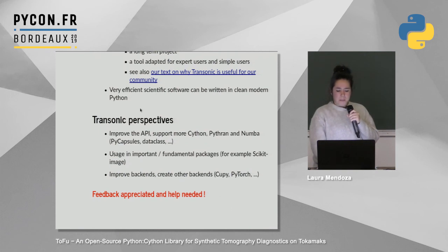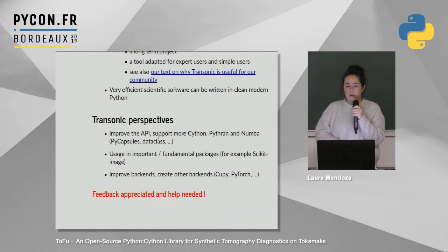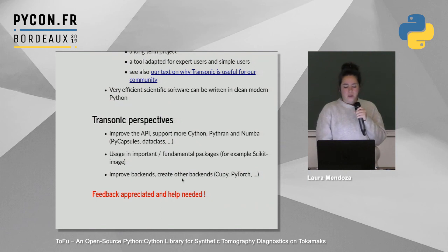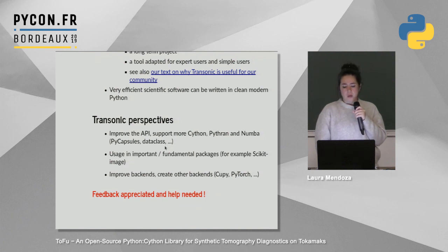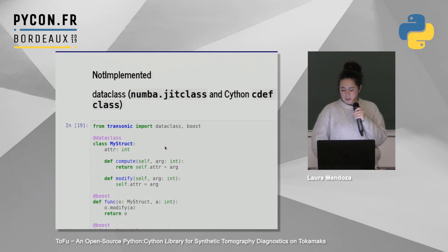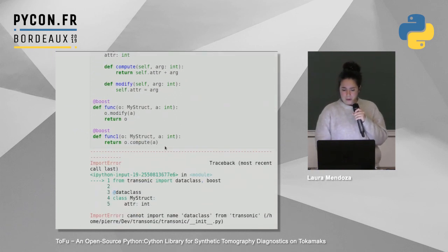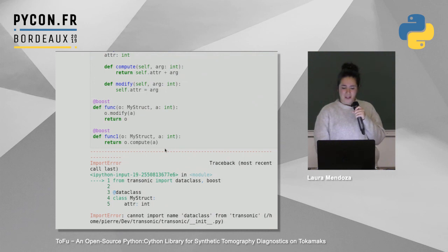If you want to read more about the community, there's a link available. The objective is that very efficient software can be written with Transonic. There are many perspectives: adding backends — CuPy and PyTorch are not yet implemented; using it in more important packages like scikit-image or scikit-learn; improving the APIs for Pythran, Cython, Numba; and so on. I'll end with a note that they're looking for help, so if somebody is motivated and interested in ultimate code optimization, you can contact them.